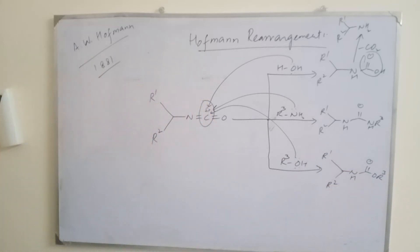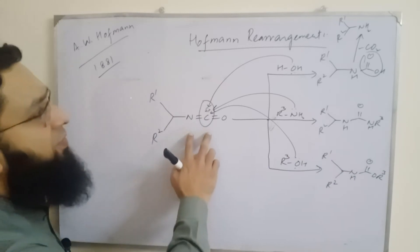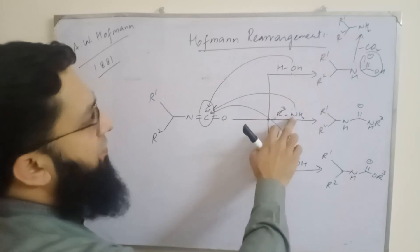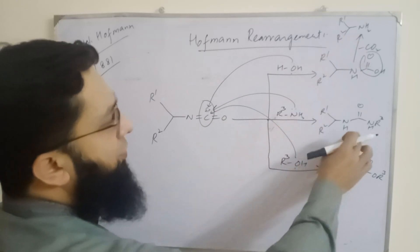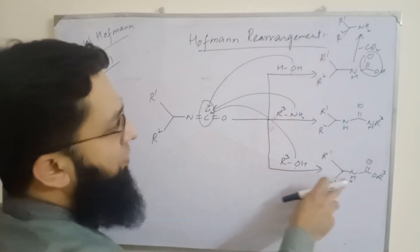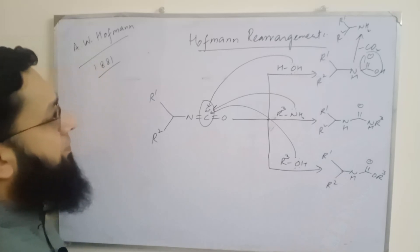If we use alcohol, it attacks here and we get carbamates. So this isocyanate can react with water to form primary amine, with amine to form urea derivative, and with alcohol to form carbamates. Now we see the characteristics.